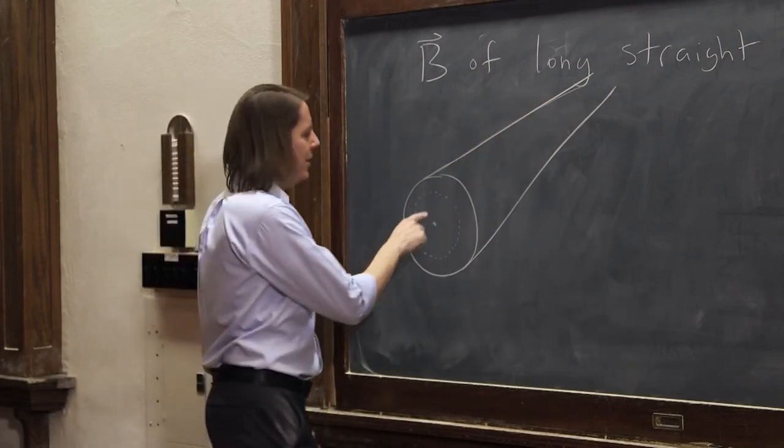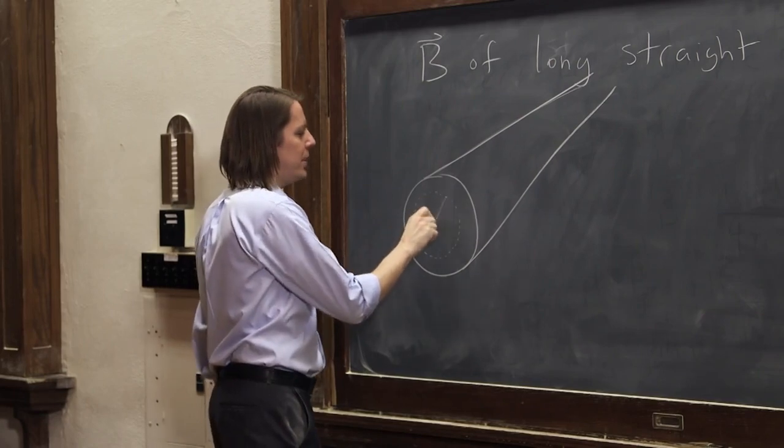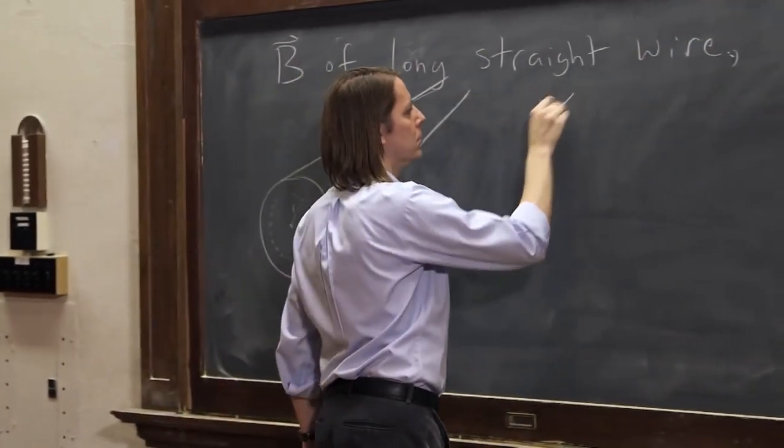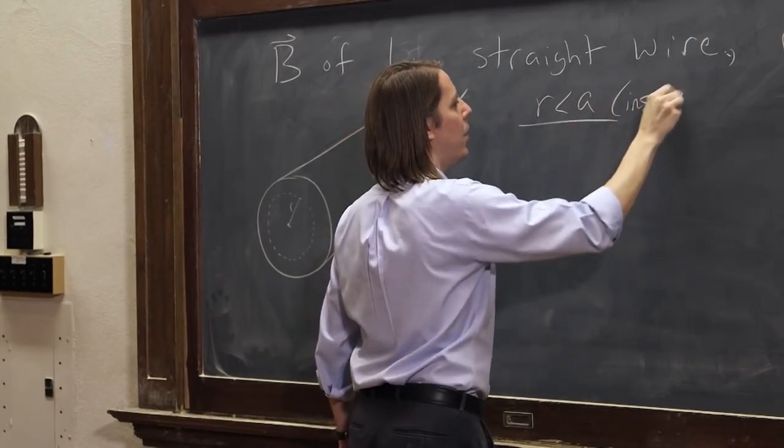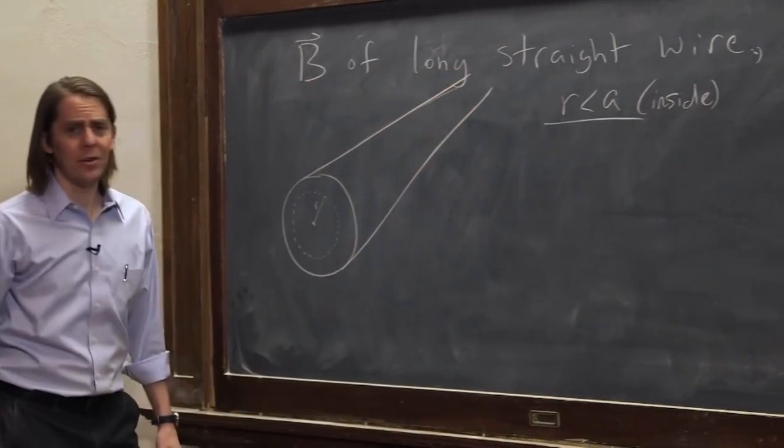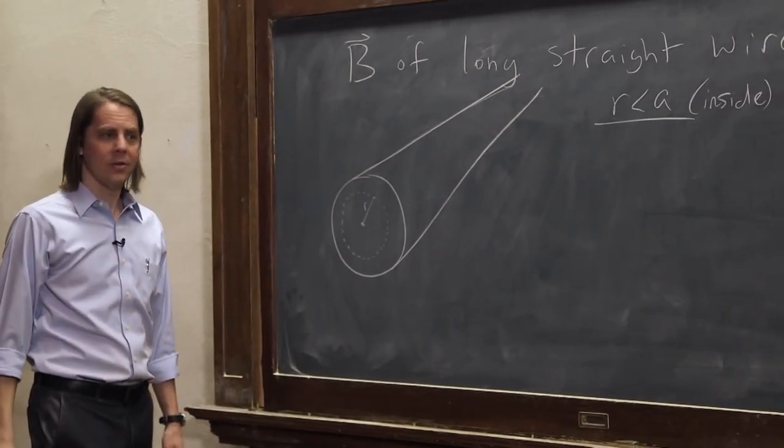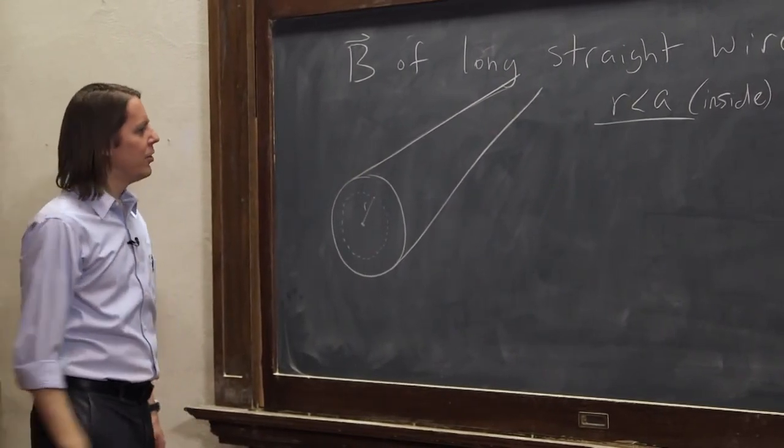So that would be one. That would be the loop where R, the radius of that loop, is less than the radius of the wire. All right. That's actually inside the wire. Can we calculate the B field inside the wire? Yes, we can. We're going to.